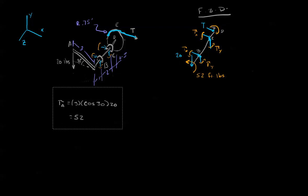So now we know that this right here is negative 52 foot pounds, or basically 52 foot pounds in the negative Z direction.